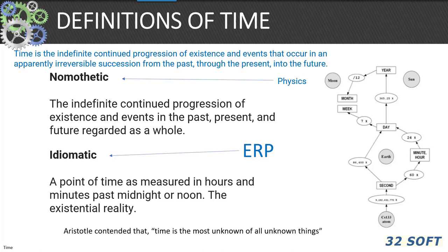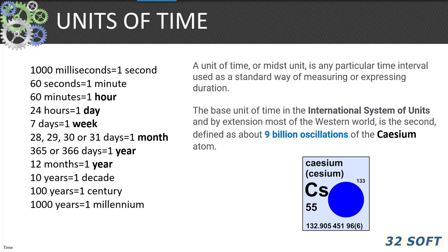Aristotle contended that time is the most unknown of all unknown things. We can look at time in two modalities, referred to as the nomothetic and the idiomatic. Nomothetic refers to the study of general laws of science. Idiomatic refers to the particular — a specific point in time as measured in hours or minutes. We will concentrate on the idiomatic and that which drives ERP.